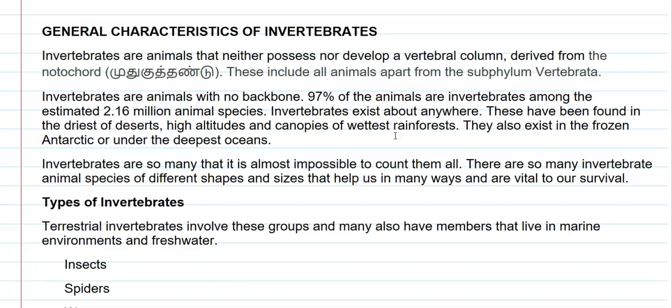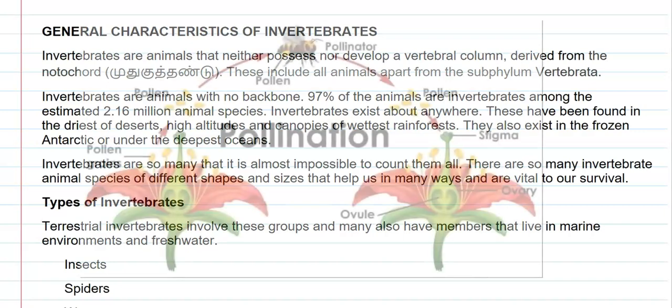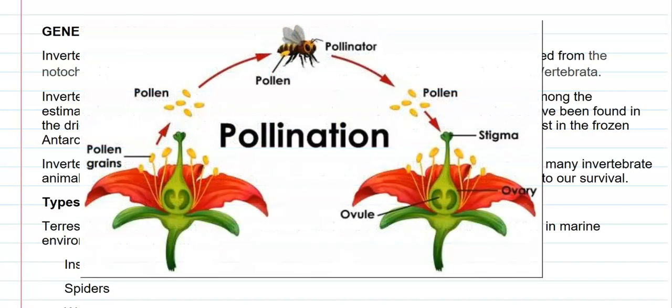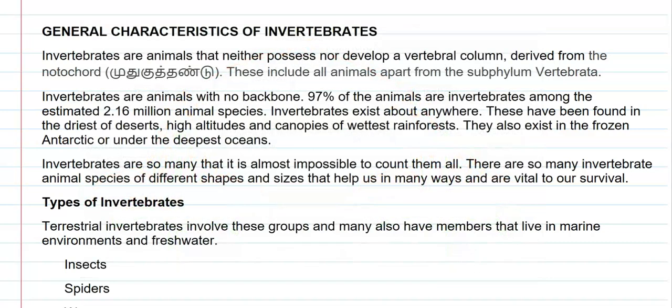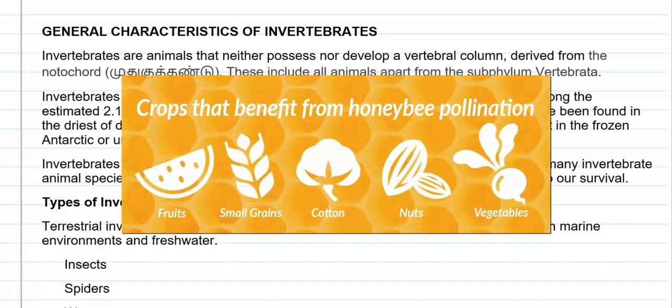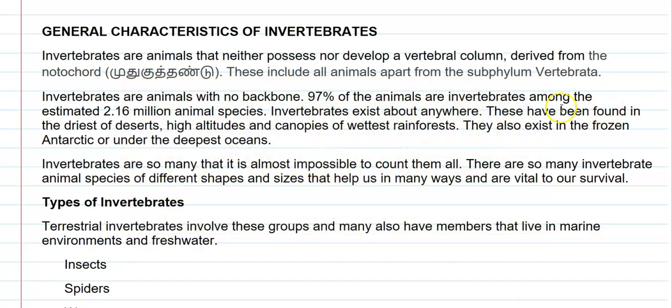Invertebrates are so many that it is impossible to count them all. There is a lot of difference in their shape and size, and they play a vital role in the survival of this earth. For example, honeybees are an important group of invertebrates that play a major role in pollination, thereby indirectly helping crop production and humankind.